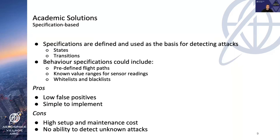Specification-based approaches define behavior specifications to use as the basis for detecting attacks — think signatures but for actions instead of inherent traits within network protocols. These can include defining acceptable flight paths, sensor values, or creating whitelists and blacklists. These approaches offer low false positives since they're only triggered upon violation of a defined specification, and they're straightforward to implement. However, there are high setup and maintenance costs, and a specification-based IDS can only detect what you define — if an unknown attack or variation occurs, the IDS has no way of detecting it.